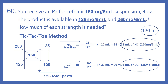Now we'll put our numbers in. Top left is our high concentration: 250. Center is our desired concentration: 150. Bottom left is our low concentration: 125. Taking the diagonal differences: 150 minus 125 is 25, placed in the top right; 250 minus 150 is 100, placed in the bottom right. Adding that column: 25 plus 100 gives 125 total parts. High concentration fraction: 25 over 125 times 120 milliliters equals 24 milliliters of the 250 mg per 5 ml. Low concentration: 100 over 125 times 120 milliliters equals 96 milliliters of the 125 mg per 5 ml.